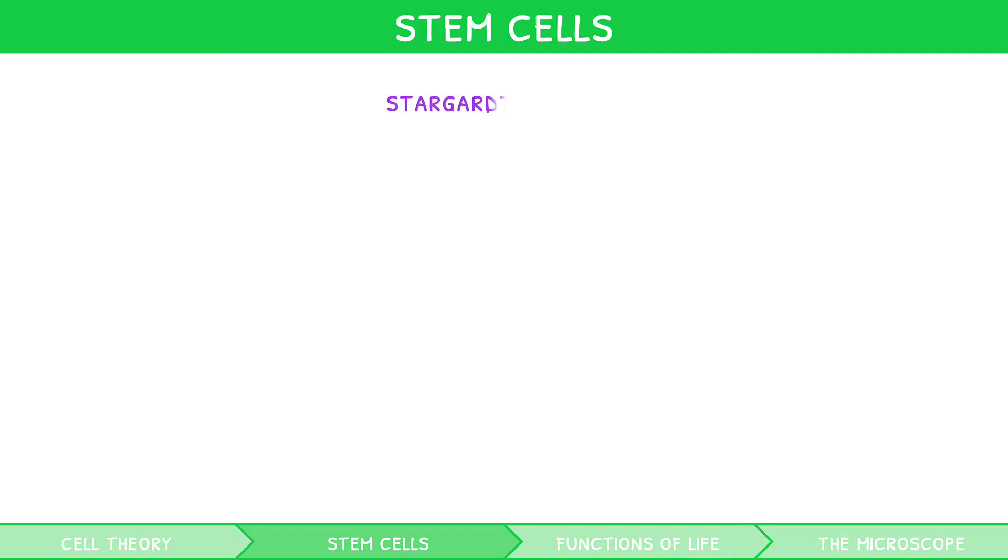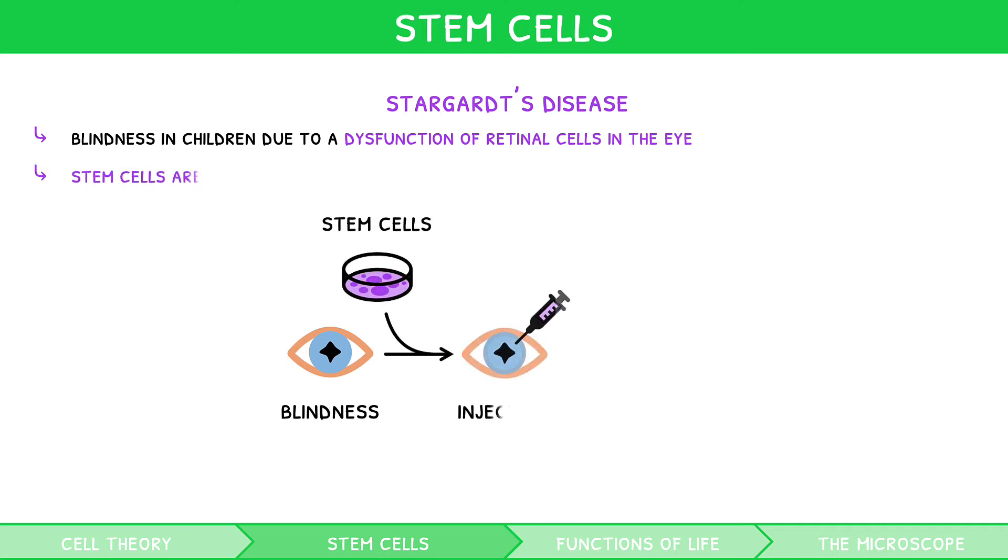The first is Stargardt's disease. This is a form of blindness in children due to a dysfunction of retinal cells in the eye. Stem cells are injected into the eye, where they can then differentiate to form healthy retinal cells, curing the blindness.